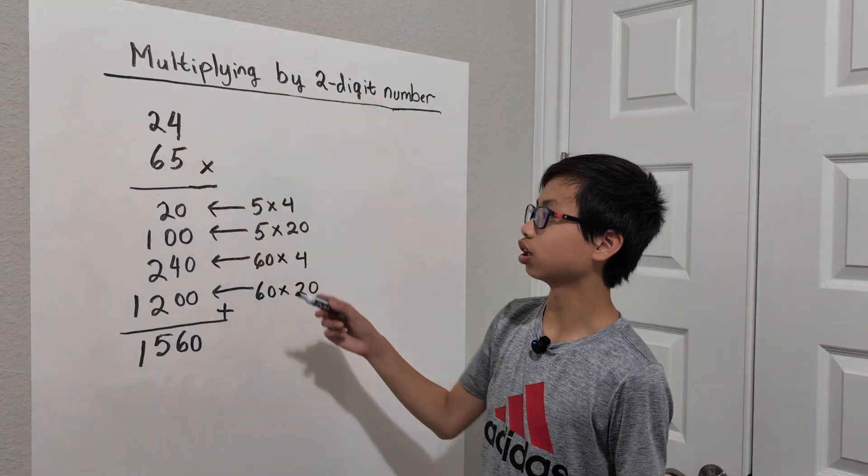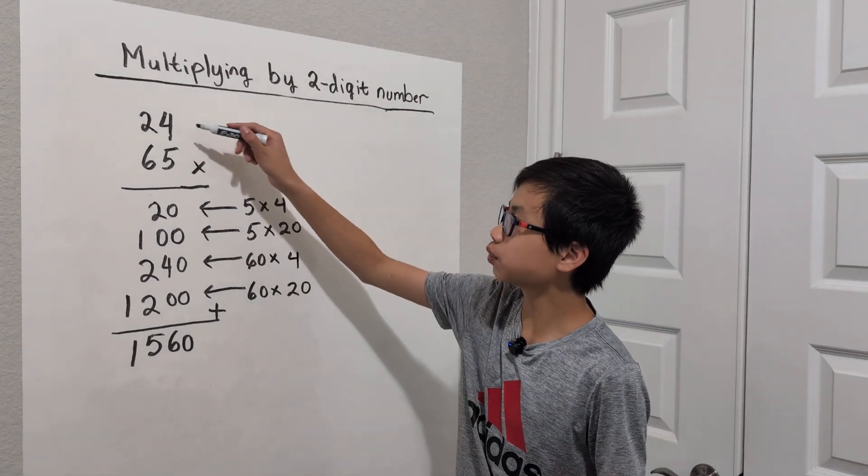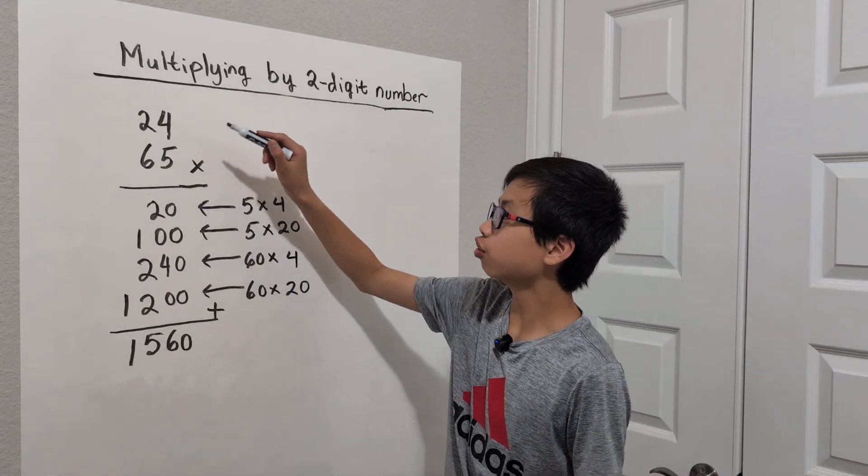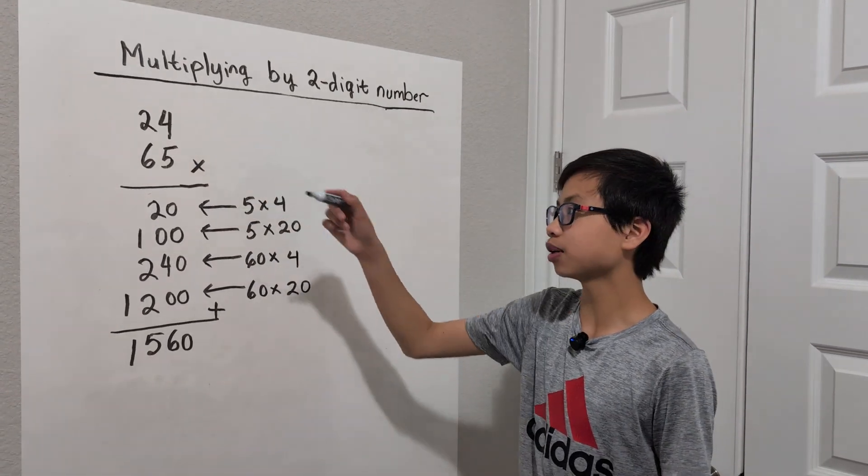So first, let's do 5 times 24. First we're going to do 5 times 4, which is 20, and after that we're going to actually do 5 times 20 instead of 5 times 2.